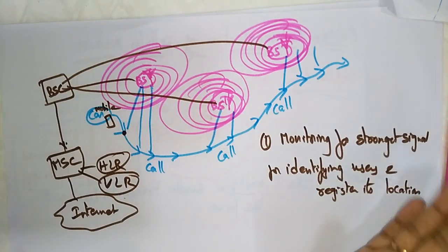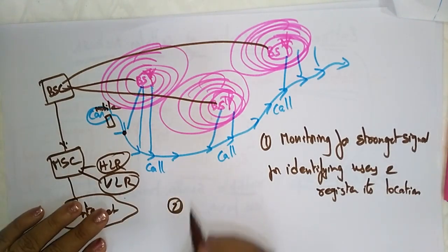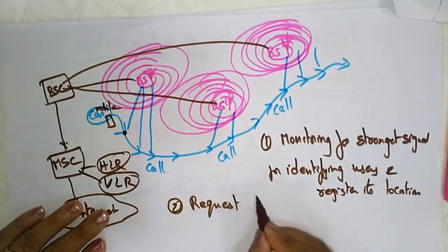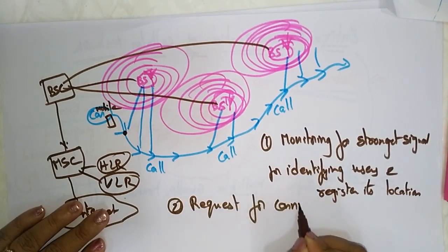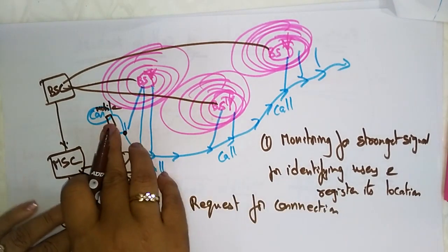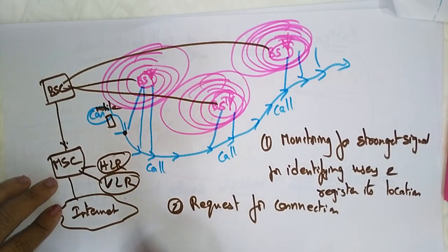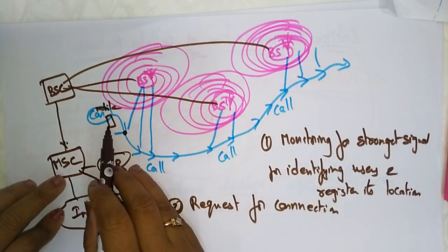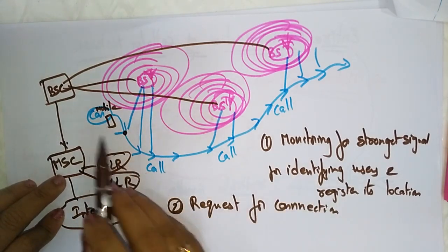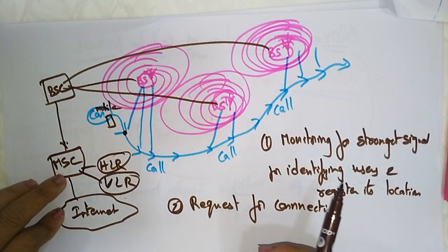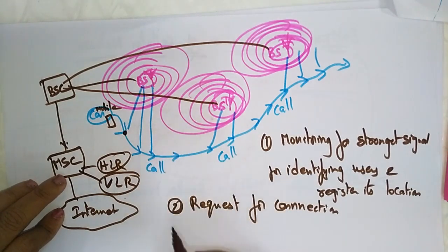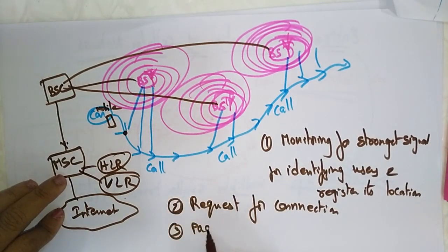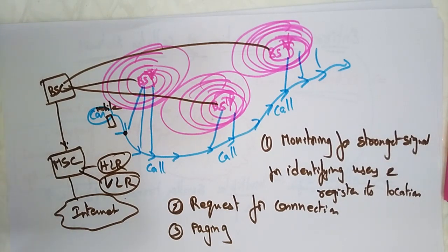Once registration is complete, the next step is request for connection. When a call comes in, the mobile unit originates a call by sending the number of the called unit on a preselected setup channel. That setup channel must be idle before the paging process begins.